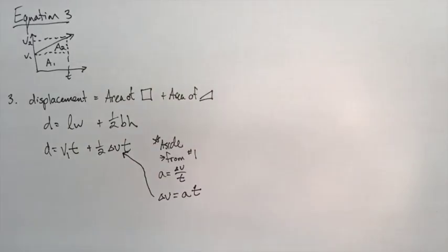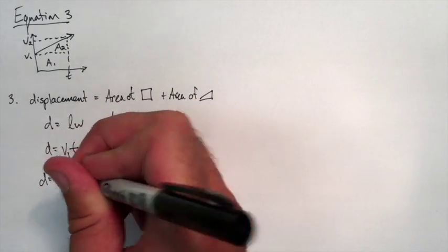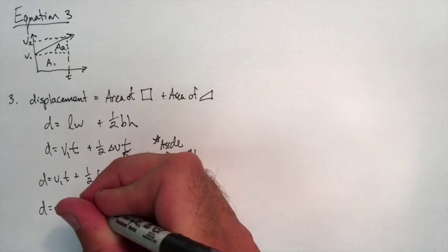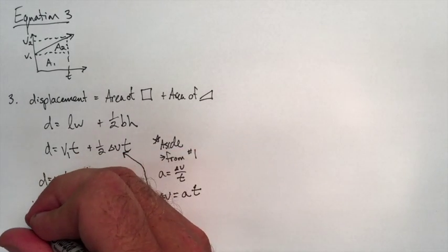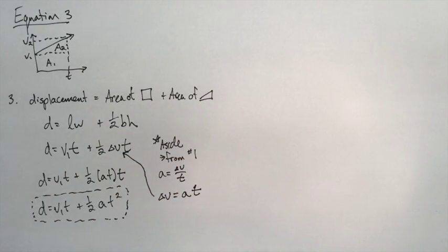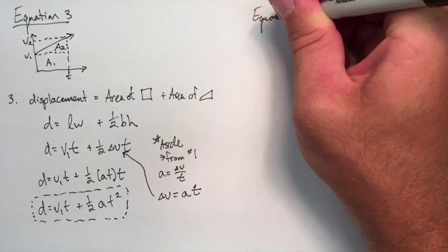So we can have an acceleration term in our equation. We substitute that in, multiply those Ts in the last term, and now we have our third equation, where we can find displacement based on our initial velocity.